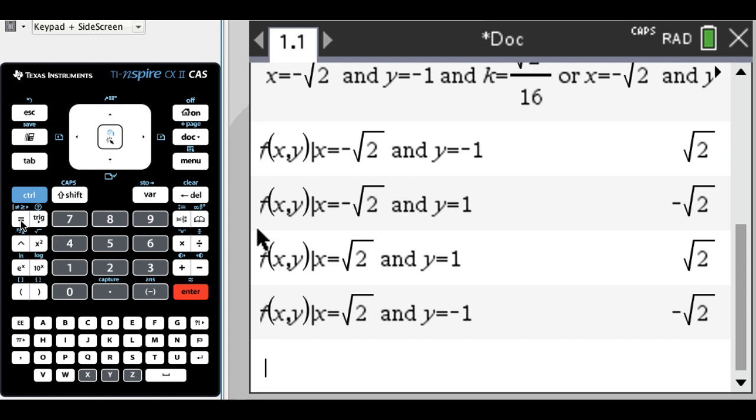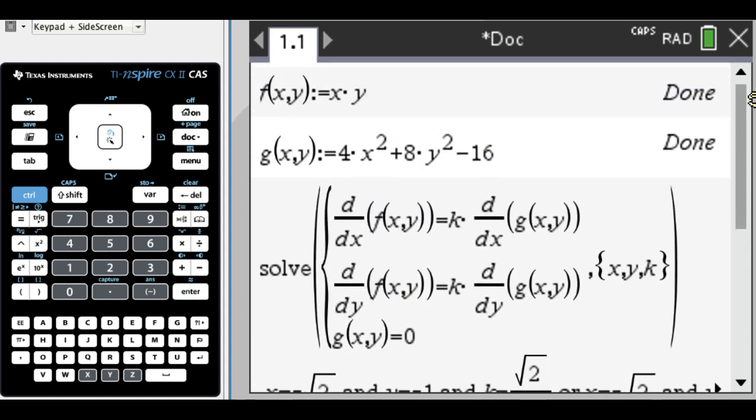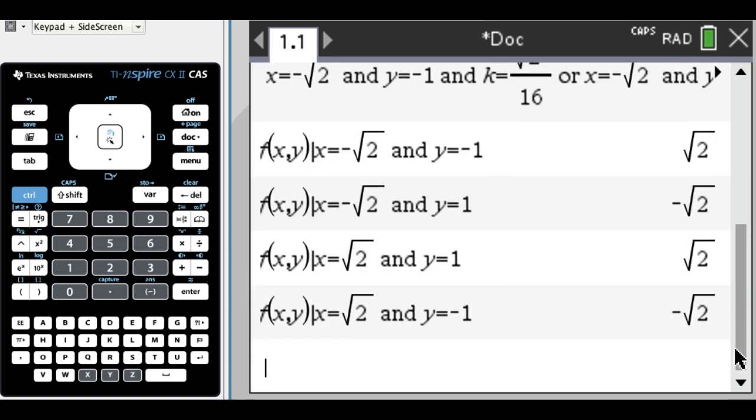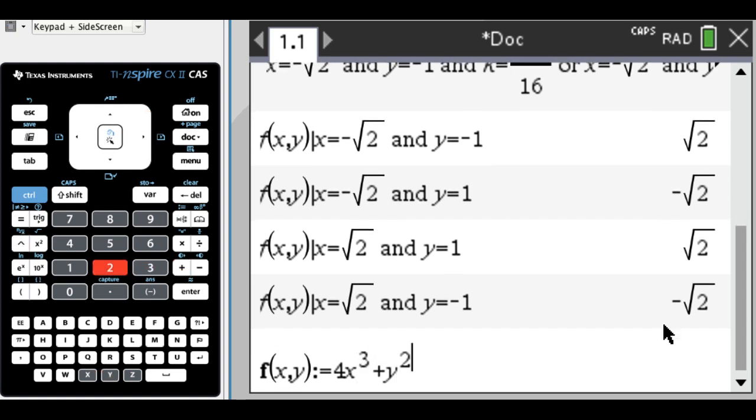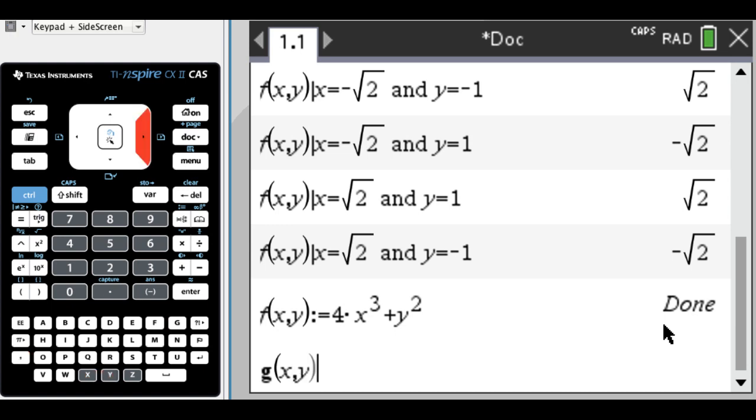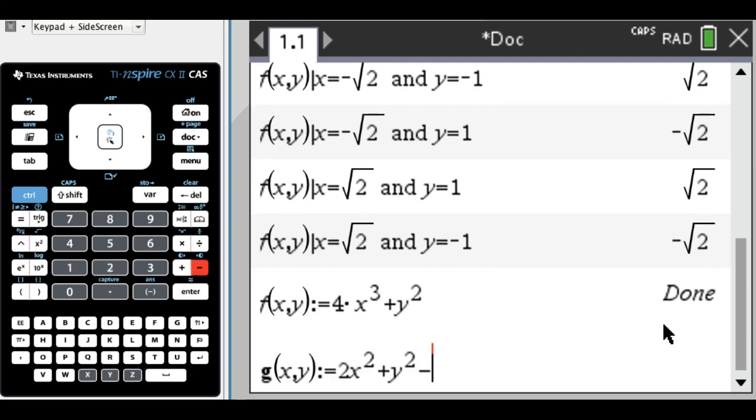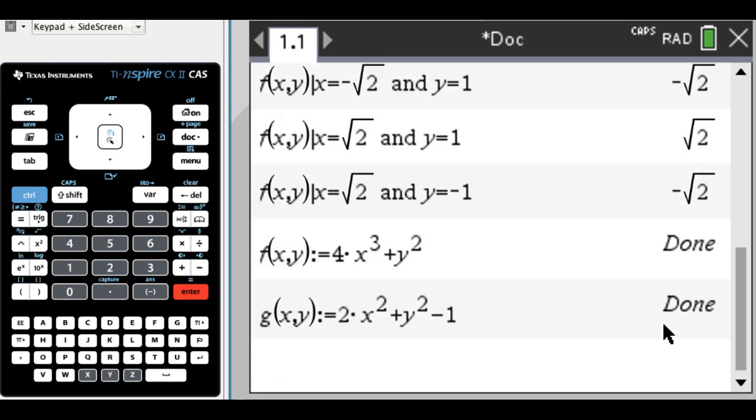Alright, so I'm going to do another problem, which is from the second video that I did, just to show you the same process. What's nice about this is because of the way that we define some things, all I really need to do is redefine f and g, and then I can copy and paste this. So f of xy colon equals 4x cubed plus y squared, g of xy, so the constraint curve that I'm given is 2x squared plus y squared equals 1, but I'll move everything over, so 2x squared plus y squared minus 1, and then one of the equations is g of xy equals 0.